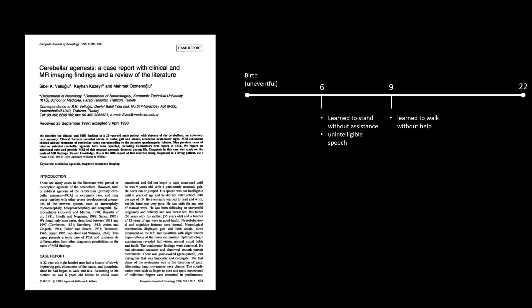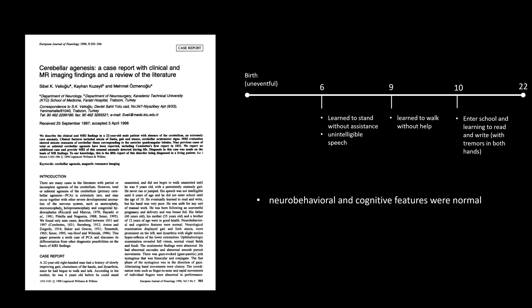The first case was presented by Sibel K. Reuloglu in 1998. This case report describes cerebellar agenesis found in a 22-year-old right-handed male. According to his mother, he only learned to stand unassisted by the age of six, and his speech was also unintelligible at that point. He only began to walk alone by the age of nine. After entering school at the age of ten, he learned to read and write despite having shaky hands. An unsteady gait was still present, and running or jumping wasn't really observed. Other than that, neurobehavioral and cognitive features were normal. Although limb ataxia was present, it was more prominent on the left side.